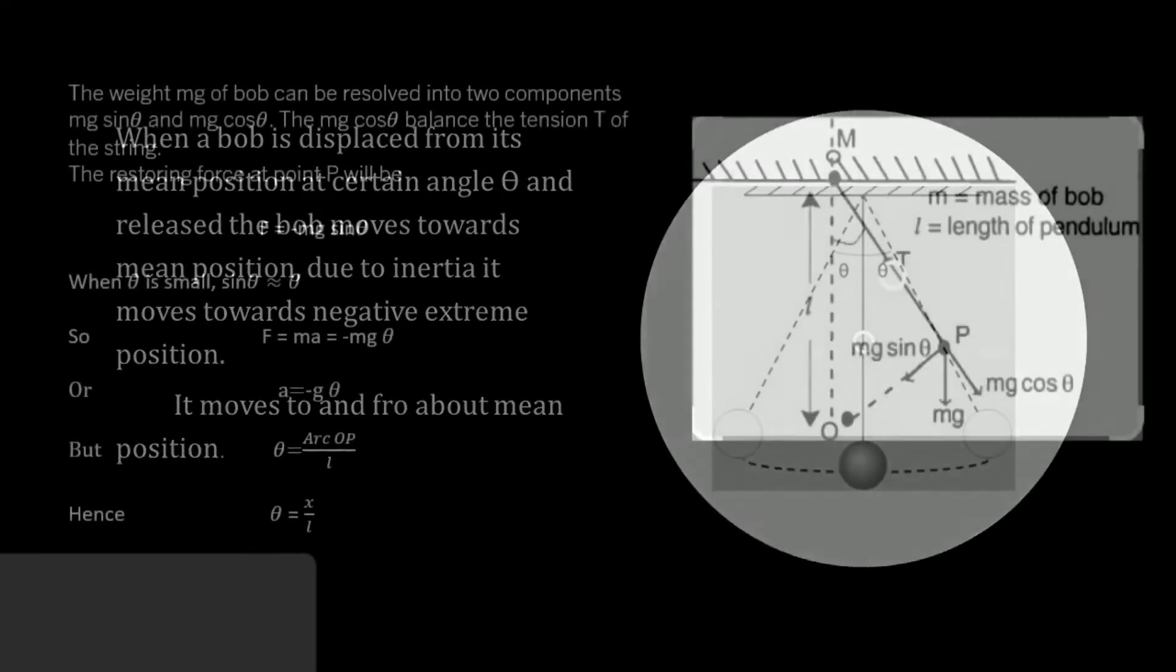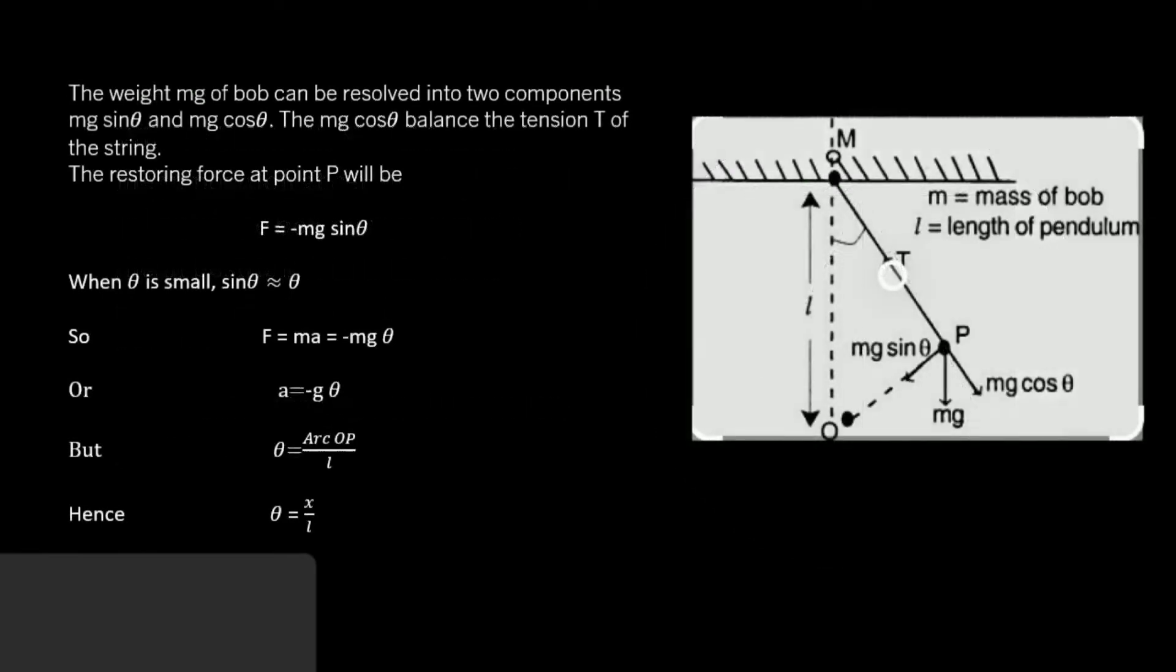The weight of the bob can be resolved into two components: mg sin theta and mg cos theta. The mg cos theta balances the tension of the string. The restoring force at point P will be F equals minus mg sin theta.